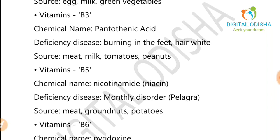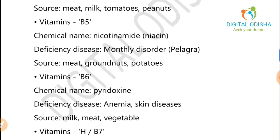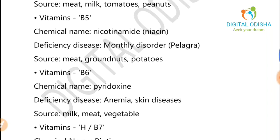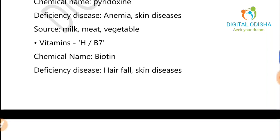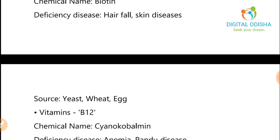Vitamin B6: the chemical name is pyridoxine. Its deficiency causes anemia and skin disease. Sources include milk, meat, and vegetables. Vitamin B7: the chemical name is biotin, and its deficiency causes hair fall and skin disease. Sources include egg white and egg.